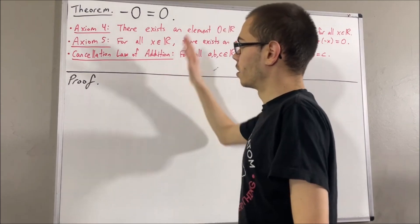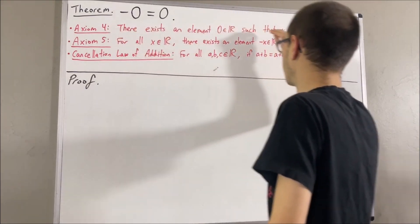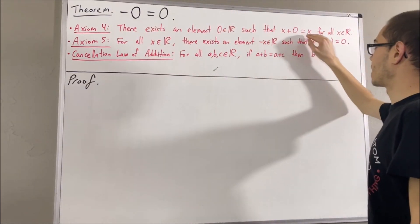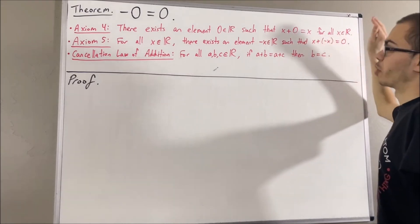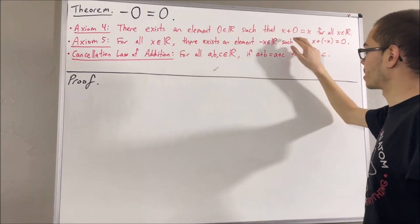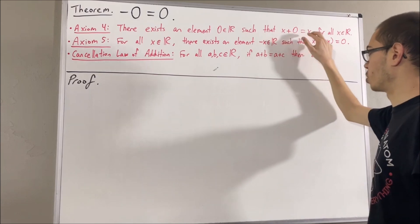To start the proof, we first note, by axiom 4, we have that this statement works for every real number. So, in particular, it must work for the real number zero. So, we must have zero plus zero equals zero.